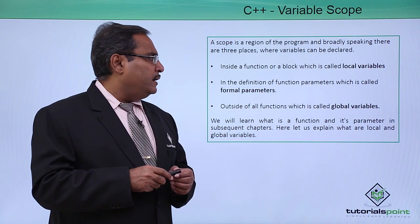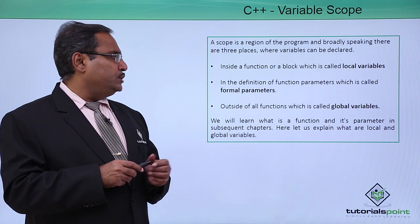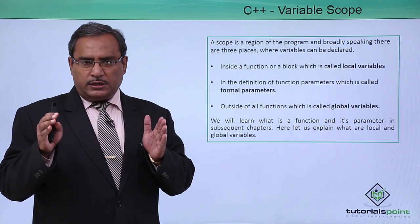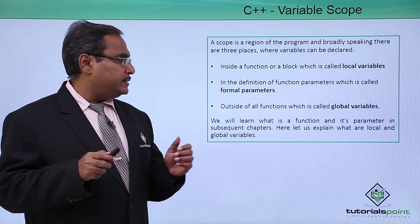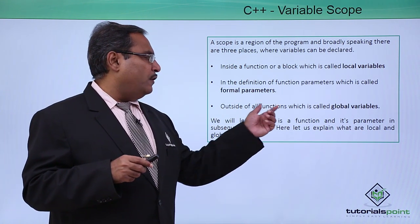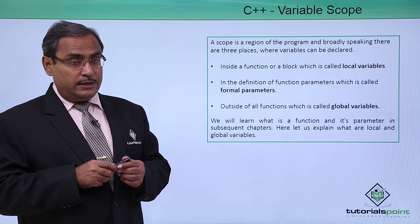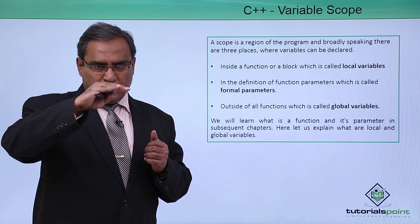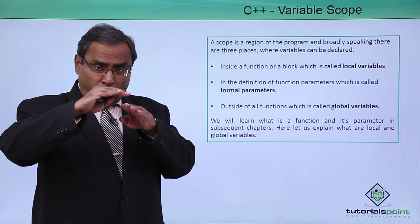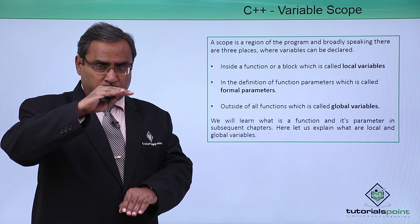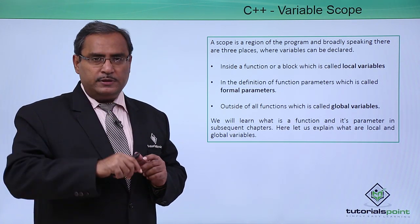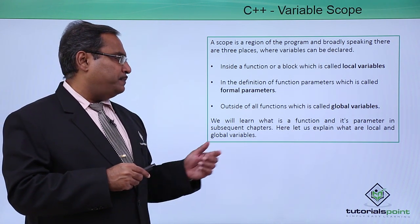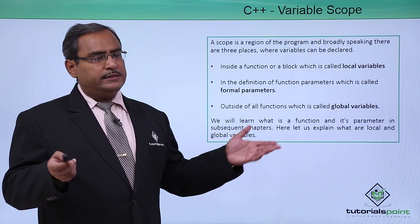The second is the definition of function parameters, which is called formal parameters, where we are going to define variables as function arguments or function formal parameters. The third is outside of all functions, which is called global variables. We can define some variables outside of all functions, and all the functions declared and defined afterwards can access those variables — those variables will be in the global scope. We will learn what a function and its parameters are in subsequent chapters.